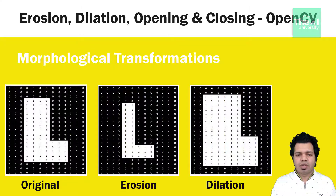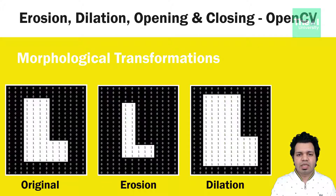Dilation is the opposite of erosion — it adds pixels to the boundaries of an object in the image. As you can see, the boundary of the letter L becomes thicker after dilation since pixels are added to its boundary. In technical terms, a pixel element is 1 if at least one pixel under the kernel is 1, resulting in an increase of the white region or the size of the foreground object.